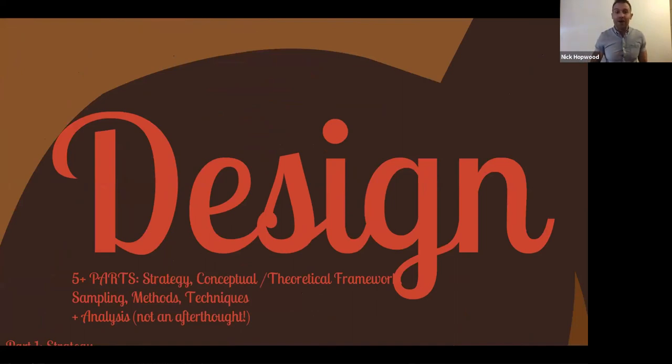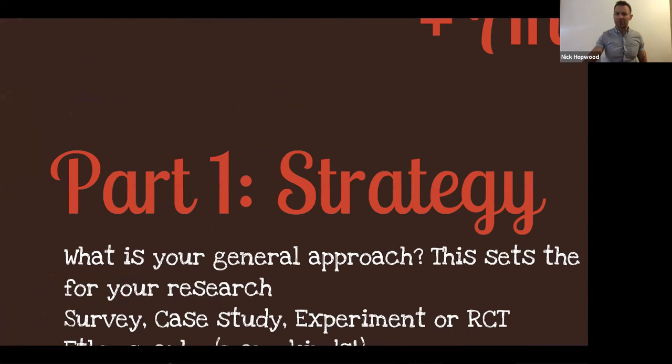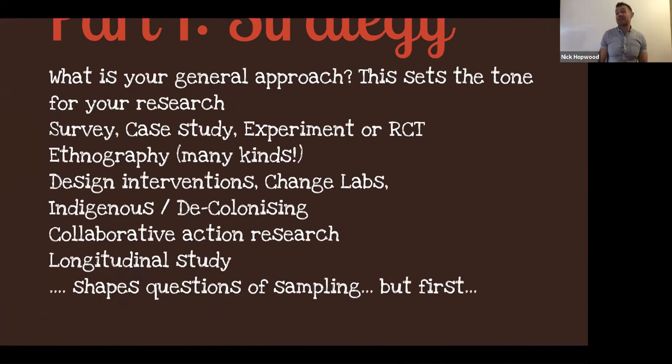Here's this five and a bit part framework: strategy, conceptual framework, sampling, methods and techniques, plus analysis not being an afterthought. I'm going to go through each one relatively quickly. By strategy, I mean the general approach that sets the tone for your research. These are often things which you summarize in fairly short language, like a survey, a case study, an experimental design, a randomized control trial. There are loads of different kinds of ethnography, digital ethnography or normal ethnography, institutional ethnography. You might be doing a design intervention, a change laboratory, an indigenous or decolonizing strategy, collaborative action research, a longitudinal study, archival work. The point is that this strategy is good to have because it's like a shorthand. It black boxes a whole load of things, and people say how are you doing your research? You say I'm doing an ethnography. Oh yeah, I get it. That sets a whole load of things in their head, and they go yeah, that's a respected method, I understand. It shapes also questions you might have about sampling.